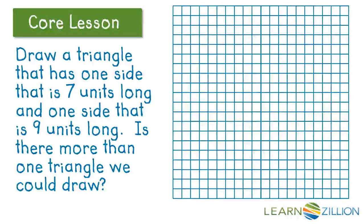So here we have our coordinate plane. And we know that we have one side that is 7 units and one side that is 9 units long. So we can start by drawing a line that is 1, 2, 3, 4, 5, 6, 7, 8, 9 units long. So we are going to use that as our base in this triangle.